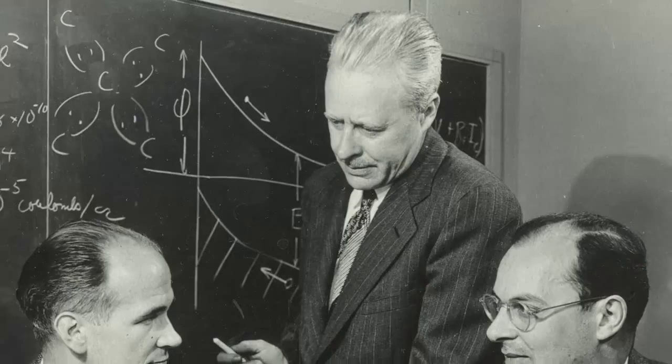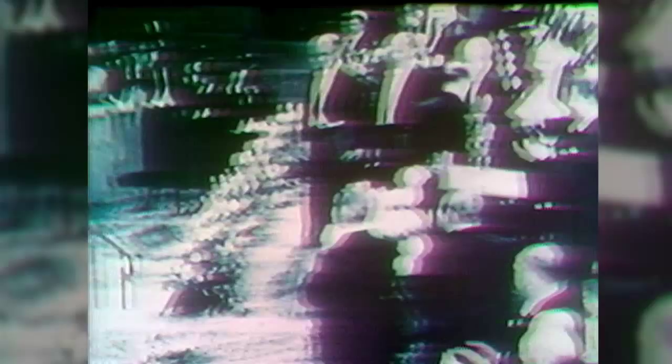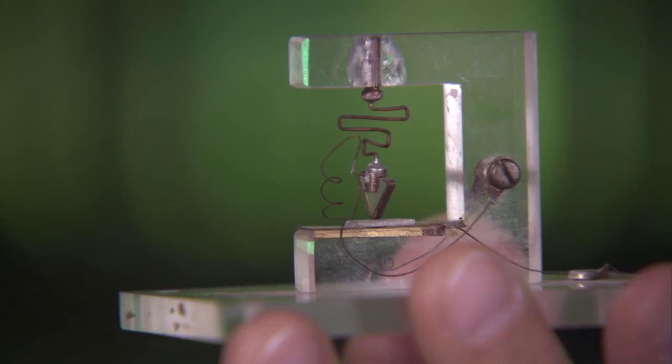In 1947, Brattain, along with his colleagues John Bardeen and William Shockley, would ultimately make the breakthrough that would allow scientists to control the flow of electricity through a semiconductor. This led to the discovery of the transistor, a semiconductor device that could be used to amplify and switch signals. It revolutionized electronics and brought the team a Nobel Prize.